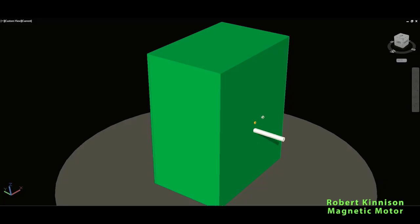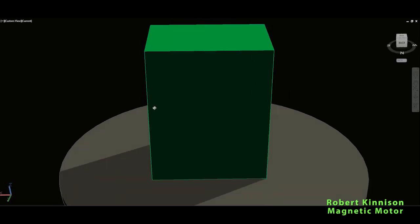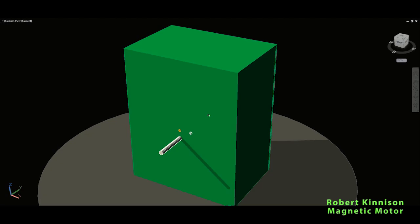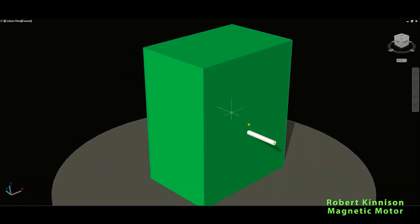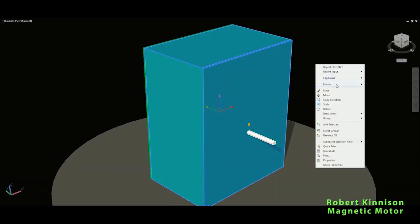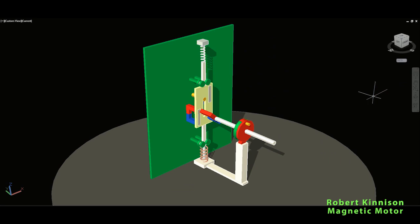Alright viewers, so this is the Robert Kinnison permanent magnet motion conversion means. Now let's have a look inside this housing to see what this consists of. Okay, so now I will hide it so you can see.